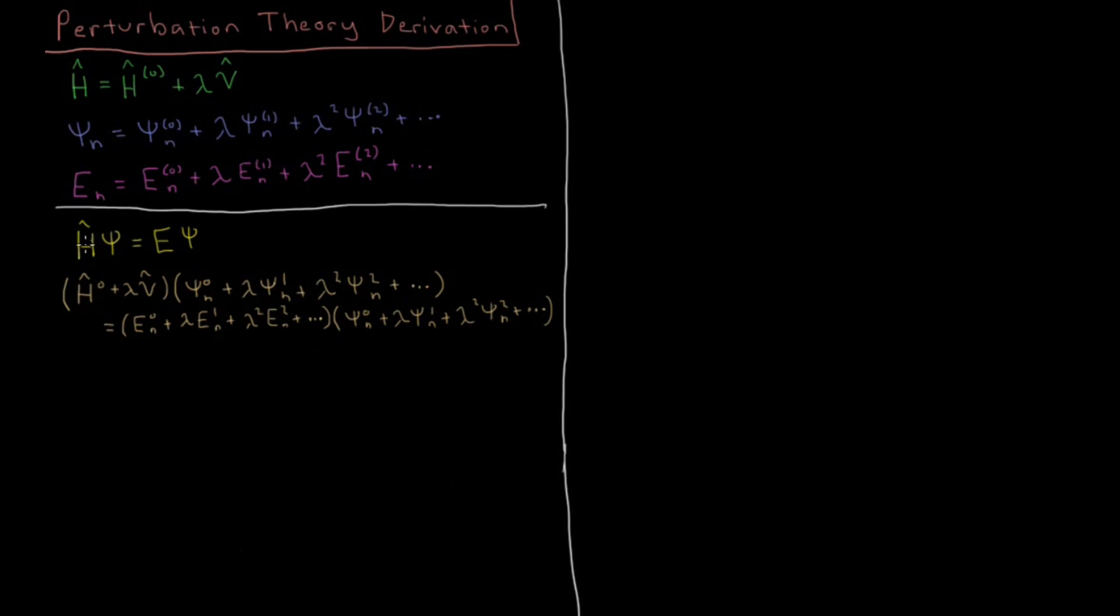So our Schrodinger equation for this system is just going to be H psi equals E psi. And we can substitute in the expressions we have here for H, psi, and E into our Schrodinger equation and get the following expressions. Now what we're going to do is break these down into the different orders in lambda in which the terms appear.